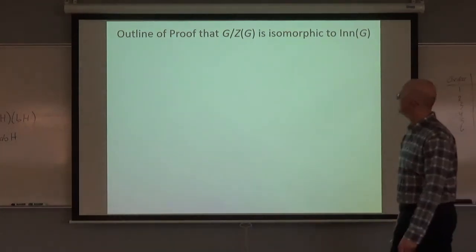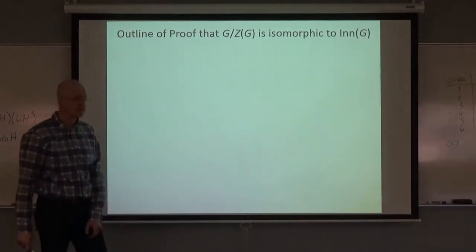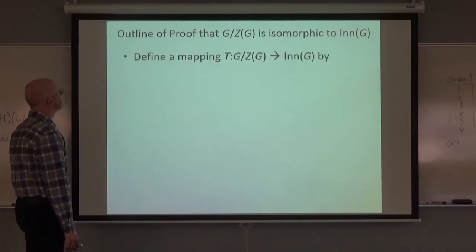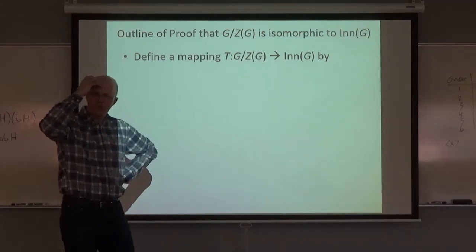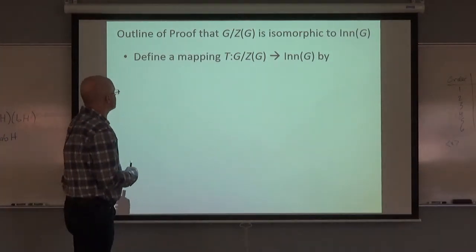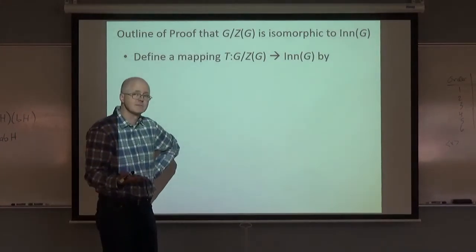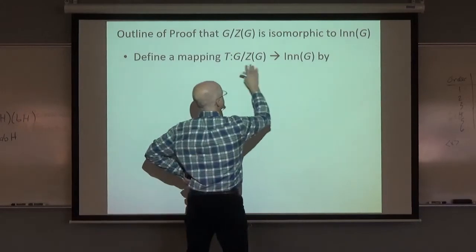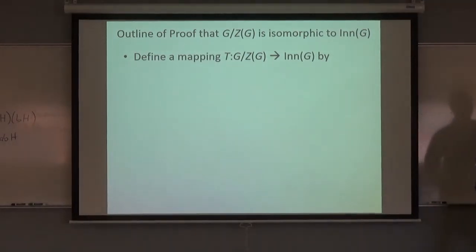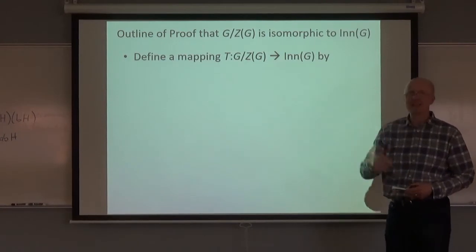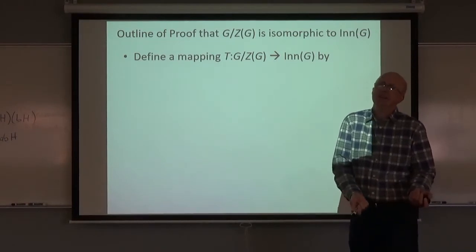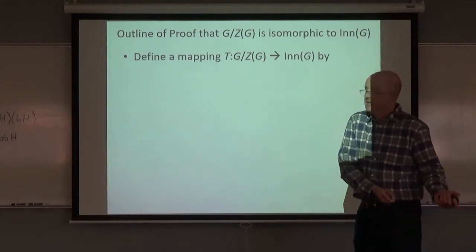Now for the proof that G/Z(G) is isomorphic to the group of inner automorphisms, Inn(G). To show two groups are isomorphic you need to come up with an isomorphism. Define a mapping T from G/Z(G) to Inn(G). The only natural choice: given a left coset a·Z(G), map it to the inner automorphism φ_a defined by conjugation.